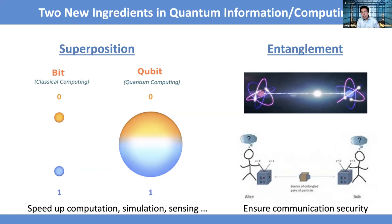Another way to think about maximum entanglement is that it enables something called quantum teleportation — you can teleport the maximum amount of information possible with such entanglement. You maximize the possible resource. The reason I mentioned maximum entanglement is because there could be partial entanglement, in which case the system may have some possibility of correlating with the rest of the universe. But if it's maximally entangled, there should be no correlation with the rest of the universe.